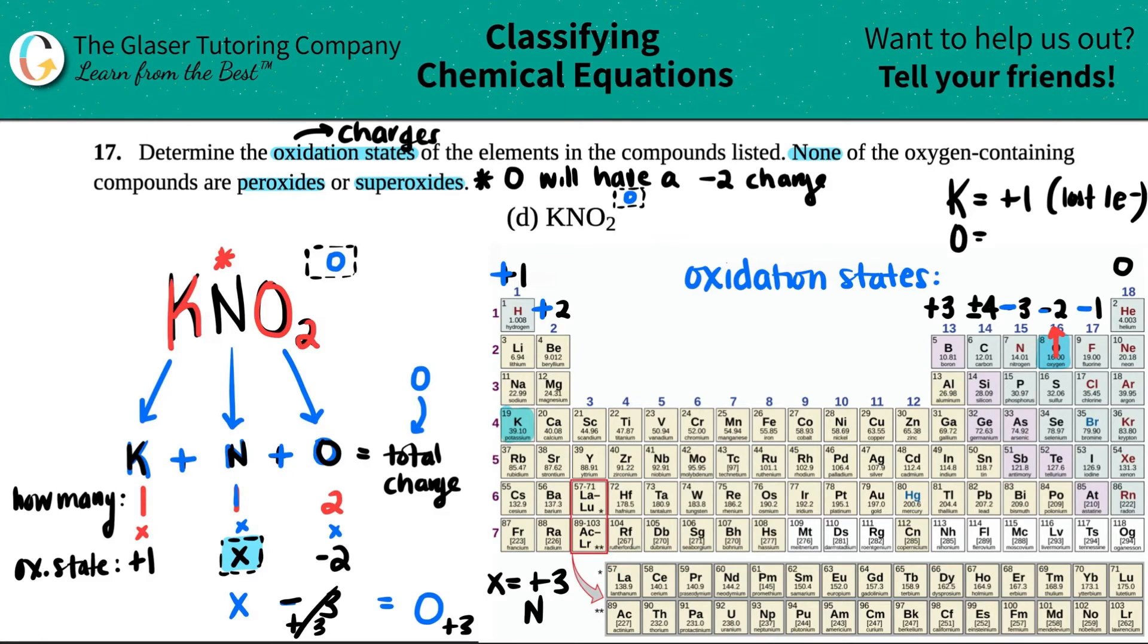Oxygen followed the trend—it was a -2. Negatives mean gain. You gain two electrons, and I'm just putting e- as electron. And then last but not least, nitrogen, which was the one that didn't follow the trend. That one was a +3. It lost three electrons. And there you go.